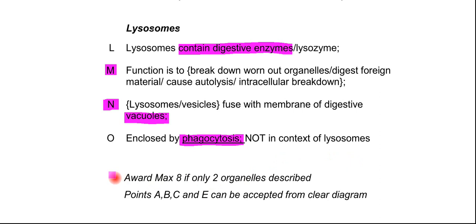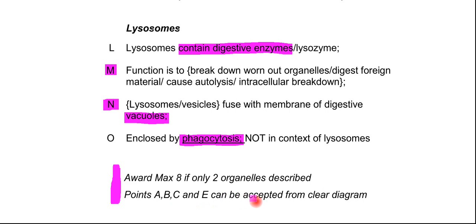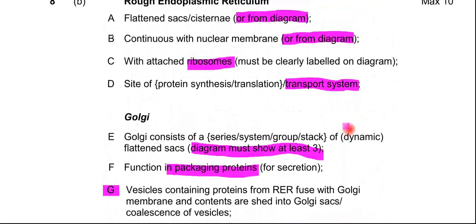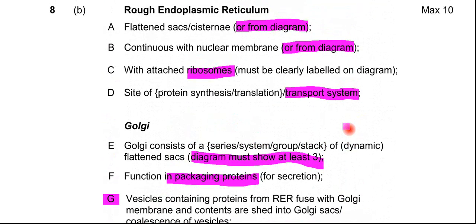There are a few notes from the mark scheme: award only eight marks if only two organelles are described. Points A, B, C, and E can be accepted from clear diagrams. That covers the structure and function of those three organelles.